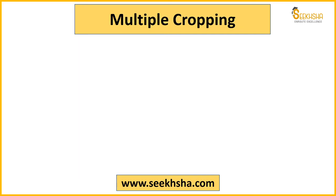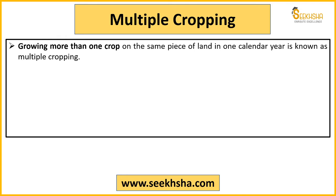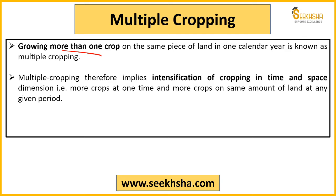Multiple cropping is a term easily understood — when you grow more than one crop on the same piece of land in one agricultural season, that is multiple cropping. Your field has not just one crop; you are growing multiple crops — two, three, or four — depending on your choice. Here you are intensifying the land use by growing more than one crop in the available time. This can also be called intensive agriculture.